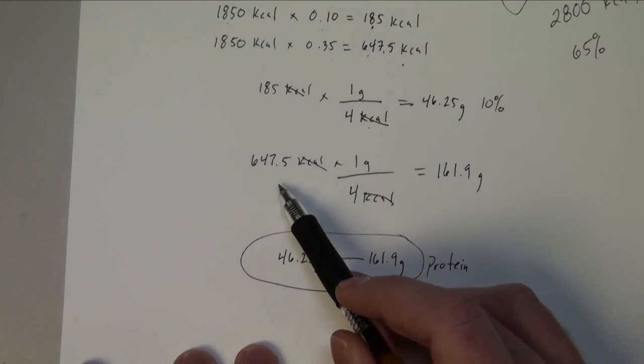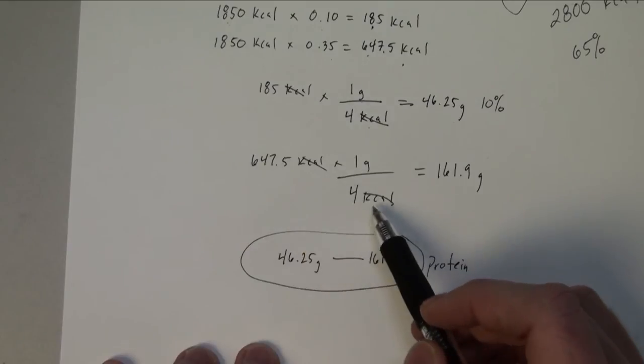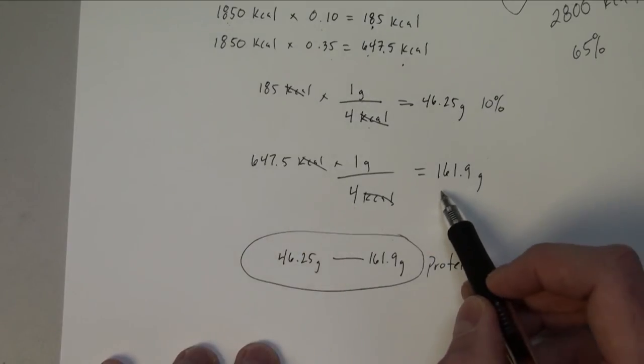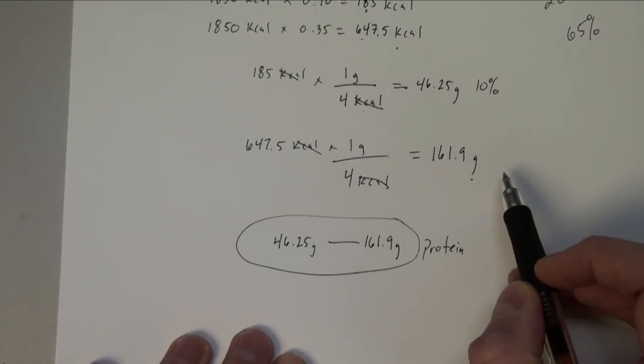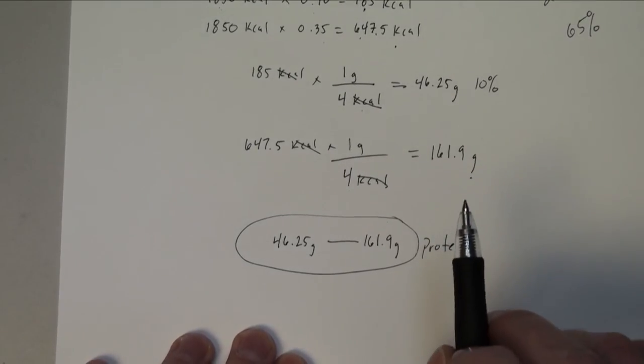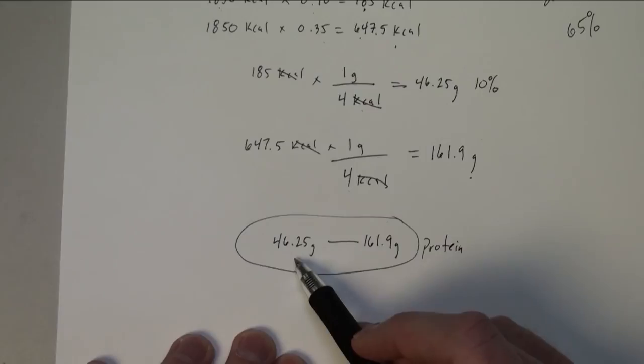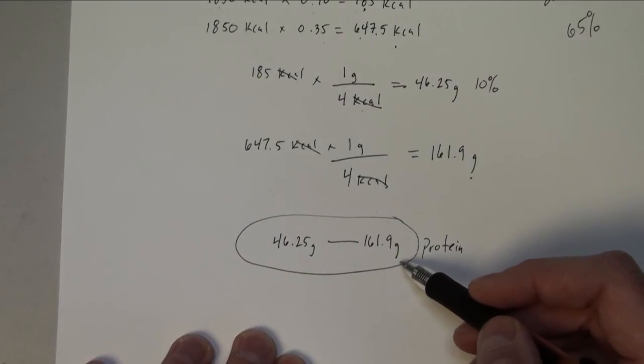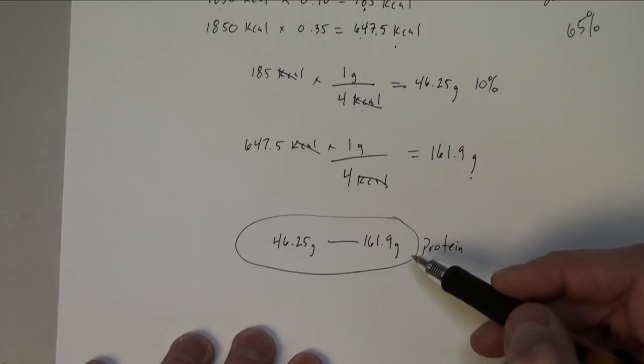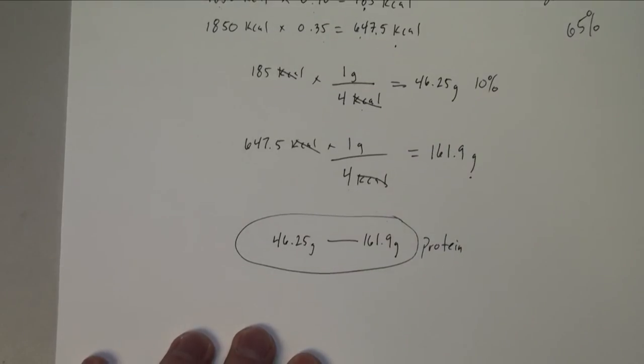And so 10% then of my calories would actually be about 46.25 grams of protein. Now to figure out the 647 one, we divide that by four. And we'll get 161.9 grams. So basically what we're saying is Susie needs approximately 46.25 grams to 161.9 grams to fit within the AMDR range of proteins. So that's how you'll do problem number one.